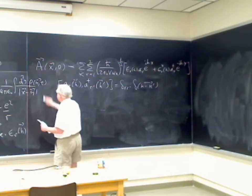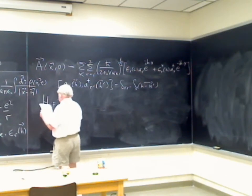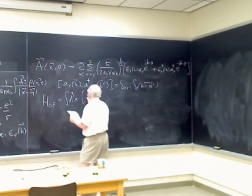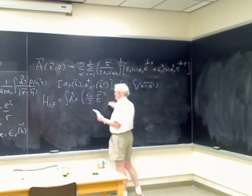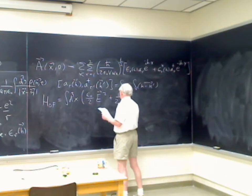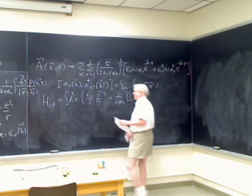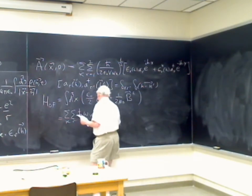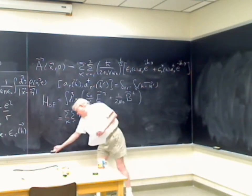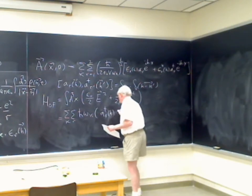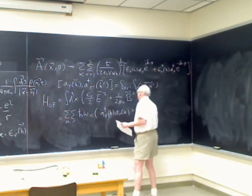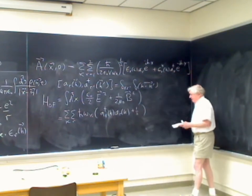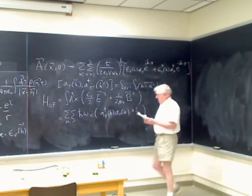The time dependence engendered by the free Hamiltonian gives an e^{plus or minus i omega t}. In fact, the last homework problem of the fifth set is to take this expression for the field and the Hamiltonian and show it equals the sum over k and r of h-bar omega_k times (a^†_{r,k} a_{r,k} plus one-half). This is the Hamiltonian for the electromagnetic field without charges.